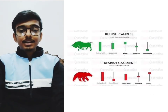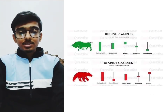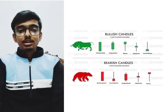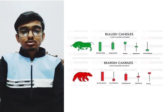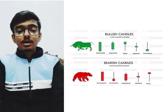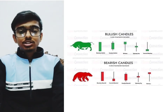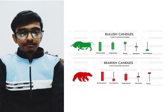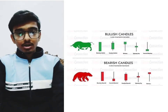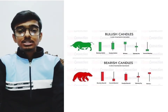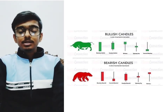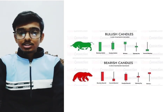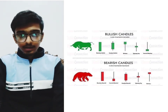How can we decide what a whole candle represents? To determine this, we have to combine the nature of both the wick and the body, and whichever is dominating will be the nature of the whole candle.